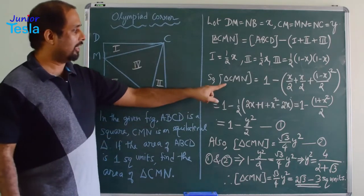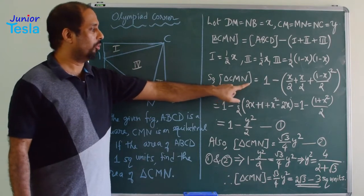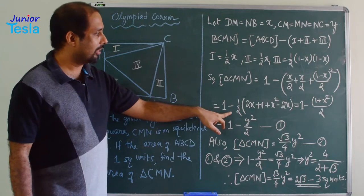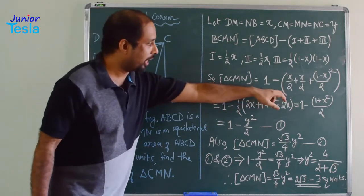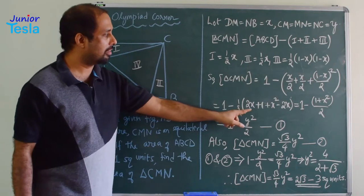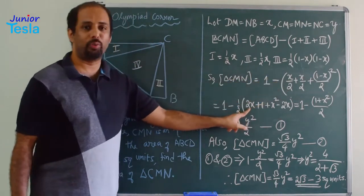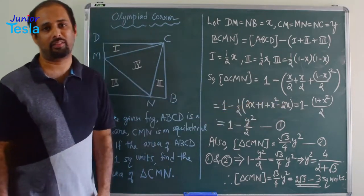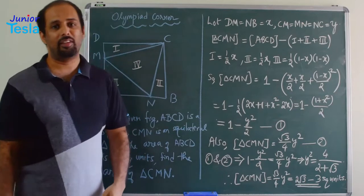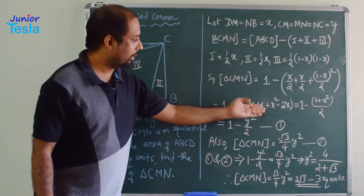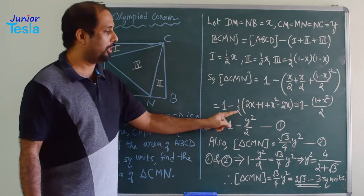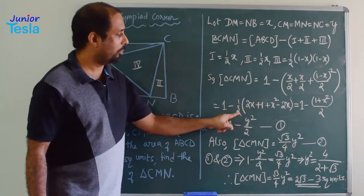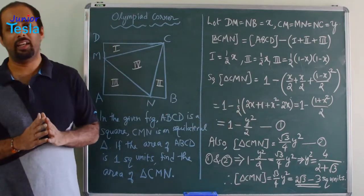The area of triangle CMN equals 1 minus the sum of the three parts. Taking 1/2 outside, we get X + X = 2X and (1 − X)² = 1 + X² − 2X. The +2X and −2X cancel, leaving 1 + X², so the area of CMN = 1 − (1 + X²)/2.